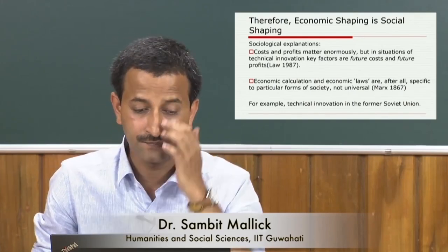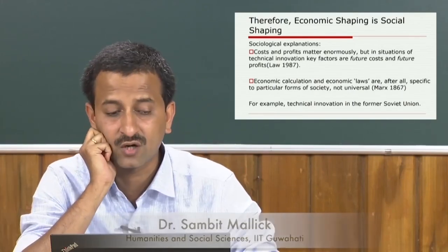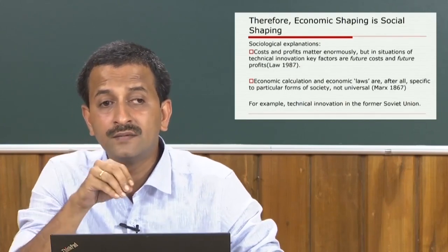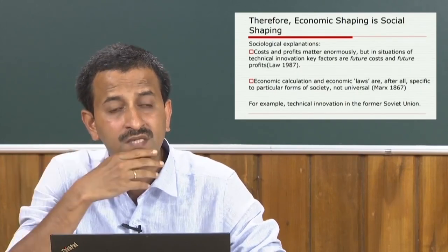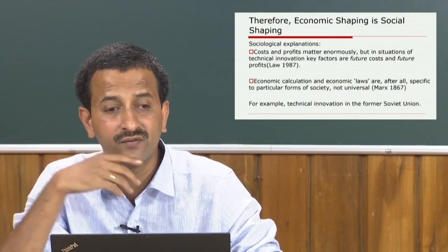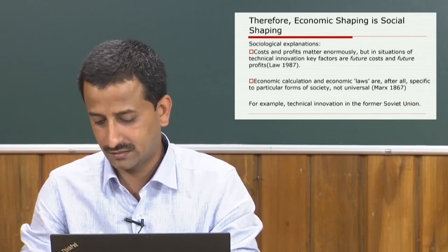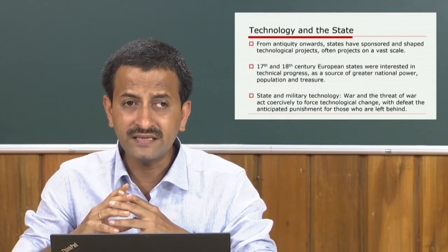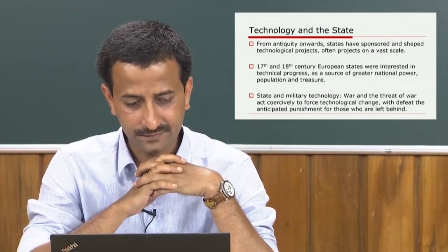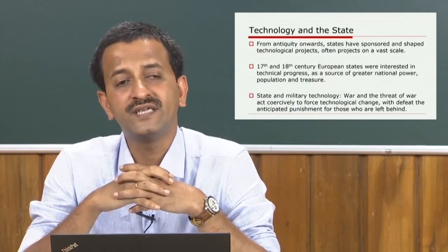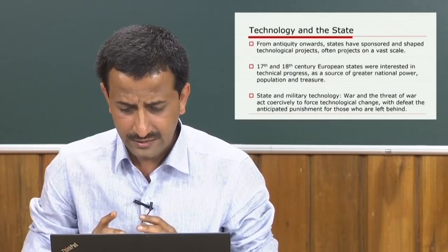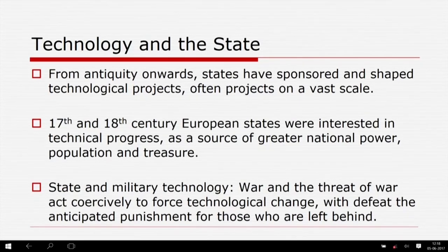Let us consider that when technical innovation includes economic calculations and economic laws specific to particular forms of society, what is the nature of the state so far as technology is concerned? That is how we come to a point of technology and the state. Social relations affect technological change through the way they shape the framework of market calculations. But the market is far from the only social institution that shapes technological change. From antiquity onwards, states have sponsored technological projects, often on a vast scale.